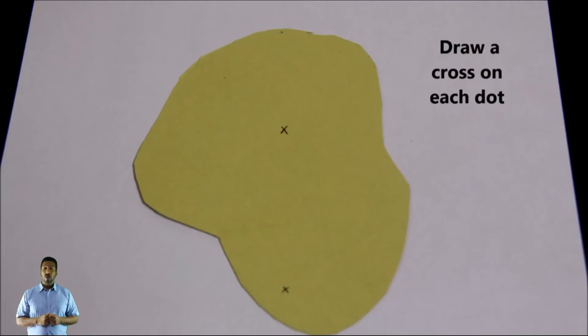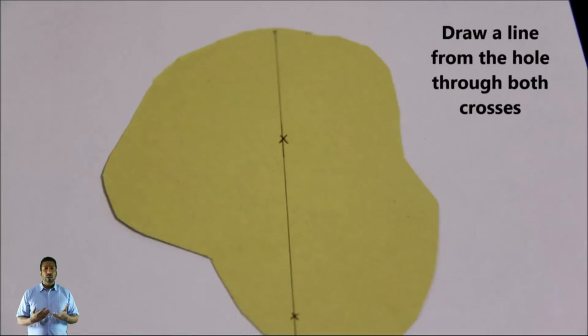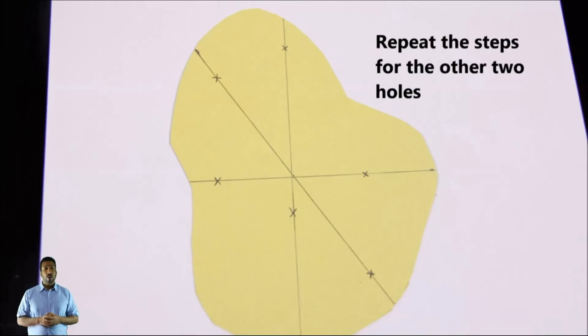Next, you draw a cross on each dot. Draw a line from the hole through both crosses. Repeat the steps for the other two holes.